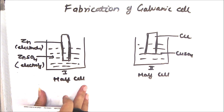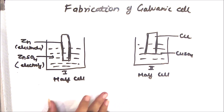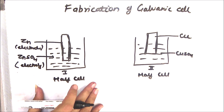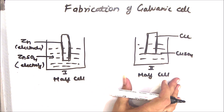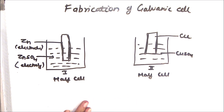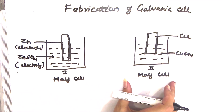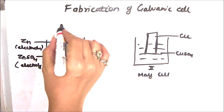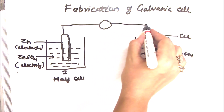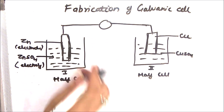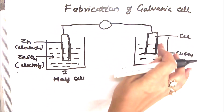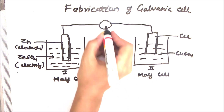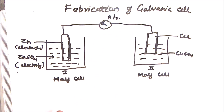Suppose this cell is losing electrons and this cell is gaining electrons — is it a complete cell? The answer is no. The reason being, if one is losing electrons and the other is gaining electrons, there must be a path from which electrons can move from this beaker to the other beaker. This becomes a complete cell only when we connect the two electrodes with the help of a wire. You can use a voltmeter to measure potential or an ammeter to measure current. So these two half cells make a complete cell.